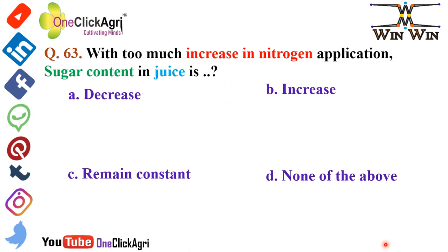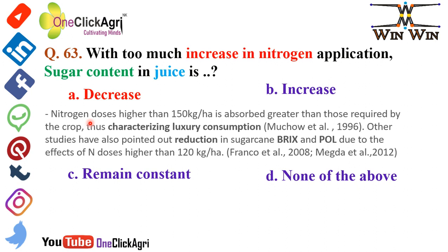Question 63: With too much increase in nitrogen application, the sugar content in juice decreases. Research shows nitrogen doses higher than 150 kg per hectare are absorbed greater than those required by the crop, characterizing luxury consumption — given by Muncho et al. in 1996. Other studies point out reduction in sugarcane Brix as well as pol — the sugar content in juice percentage — due to nitrogen doses higher than 120 kg per hectare, given by Franco et al. in 2008 and Megda et al. in 2012.